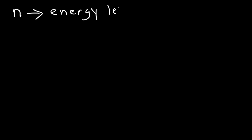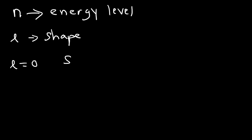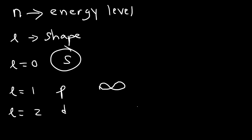L is the angular momentum quantum number, and it describes the shape of the orbital. When L is zero, you have the s orbital, which looks like a sphere. When L is one, you have the p orbital, which looks like a dumbbell. When L is two, you have the d orbital, which is a cloverleaf for the most part. When L is three, you have the f orbital, which looks pretty strange — I'm not going to draw it in this video. So L describes the shape of the orbital.